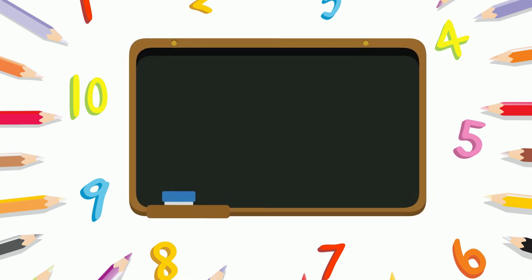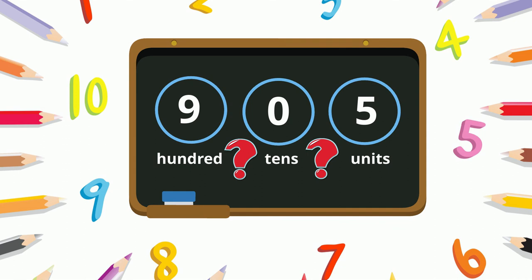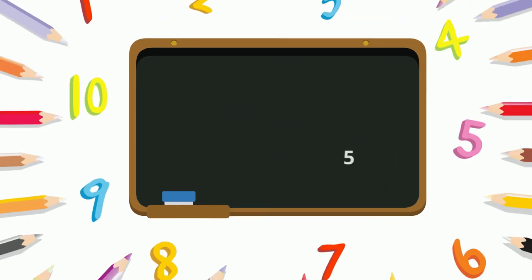How many units, tens, and hundreds are there in the number 905? There are 5 units, 0 tens, and 9 hundreds. We read it as nine hundred and five.